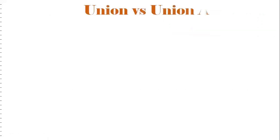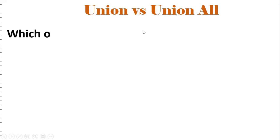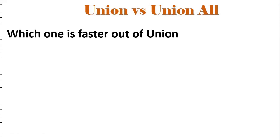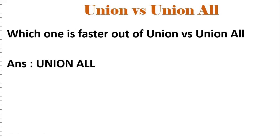One more interview question: union versus union all - which one is faster? Union eliminates duplicate values and has only distinct values, and it performs sorted results. Union all will have duplicate values and no sorting is performed - it simply clubs two results into a single result set. When comparing union and union all, union all is faster. Because in union, we perform a distinct operation as well as a sort operation - that makes union expensive and a little bit slower compared to union all.